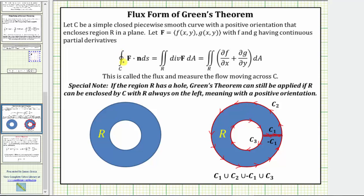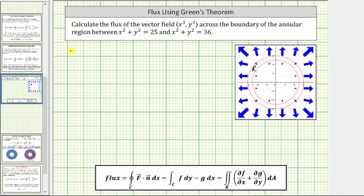This means the line integral along curve C of the vector field F dotted with the unit normal vector N differential S — which is flux — is equal to the double integral over the region R of the partial of F with respect to X plus the partial of G with respect to Y, differential A, where F is the X component and G is the Y component of the vector field. Going back to our problem, F of x, y equals x cubed and G of x, y equals y cubed.